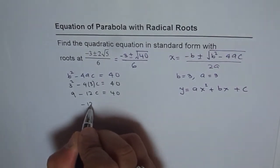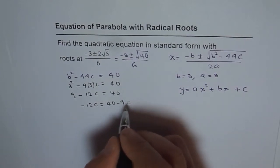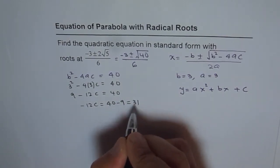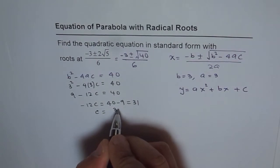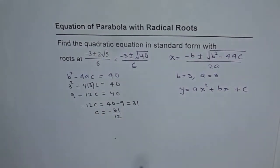So we have -12c = 40 - 9 = 31. Therefore, c = -31/12. That is the value of c for us.